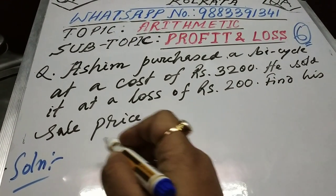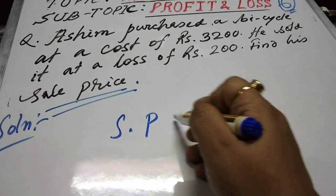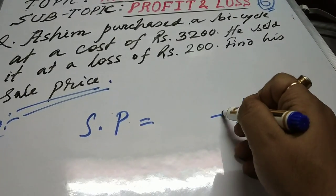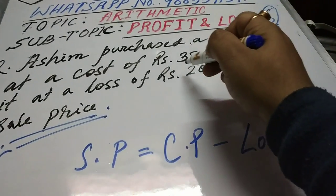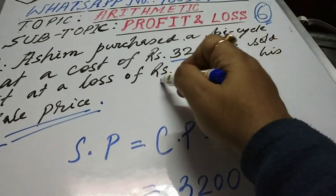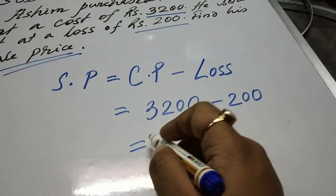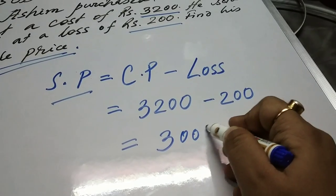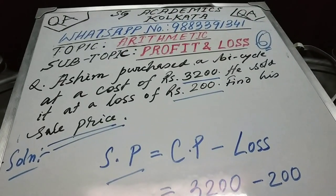To solve this problem, we will be using a formula where to find the sale price, we deduct the loss amount from the cost price. The cost price is given as rupees 3200 and the loss amount is rupees 200. So the sale price would be 3200 minus 200, which equals 3000.